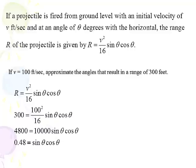So I plug these in. 300 goes in for R. 100 goes in for v. And I multiply both sides by 16. And I take 100² and get 10,000. I divide both sides by 10,000. And I end up with 0.48 = sin θ cos θ.